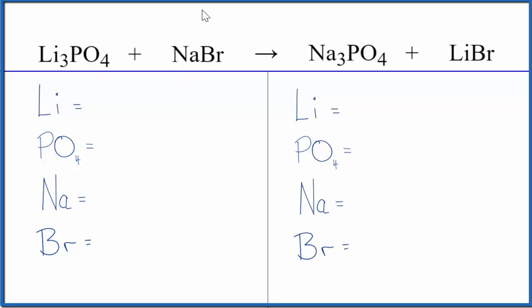Before we balance, let's take a look at the states. Lithium compounds in general are very soluble. Lithium phosphate is soluble, as is lithium bromide. Sodium compounds are very soluble too. Sodium bromide is soluble, and sodium phosphate is soluble.